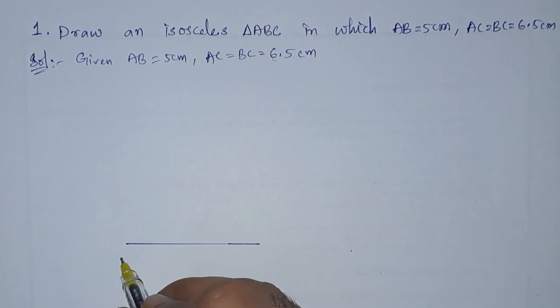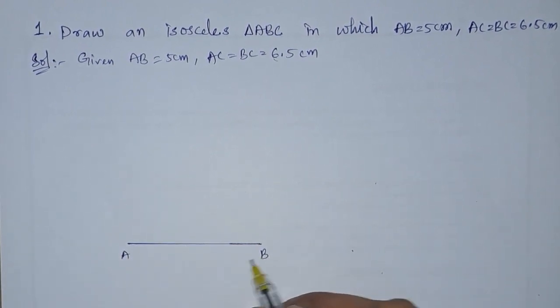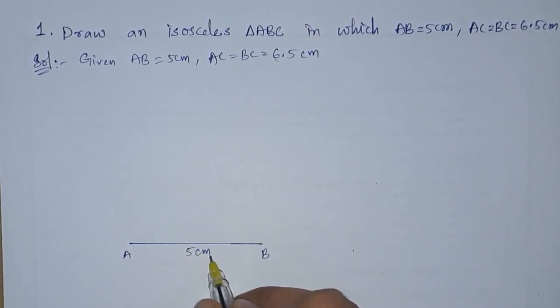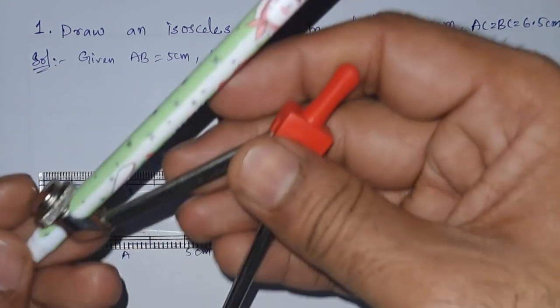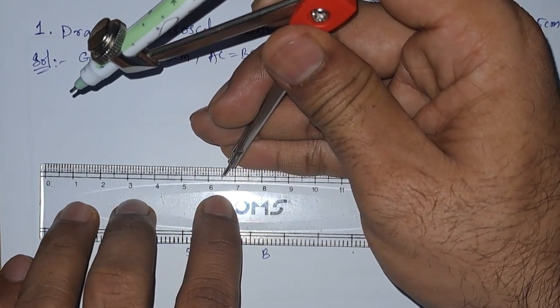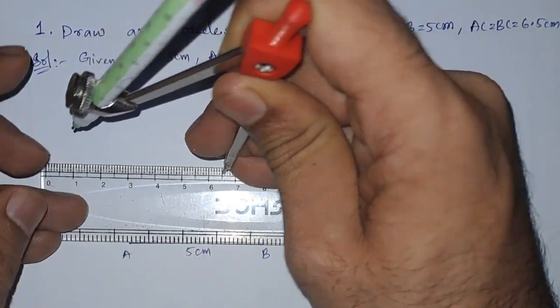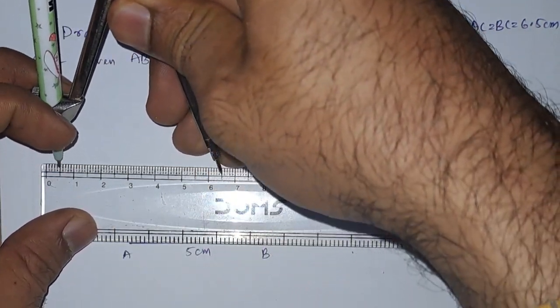So this is A and this is B. This is 5 centimeters. Next, with the help of the compass, we need to take 6.5 radius. So let us take the 6.5 radius.